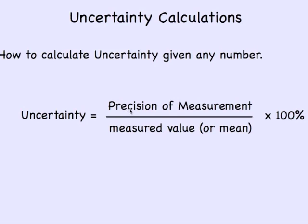Uncertainty equals precision of the measurement, and we'll talk about that next, divided by the measured value or the mean if you measured something multiple times. We'll start.